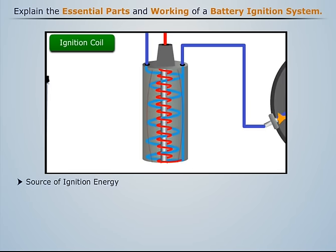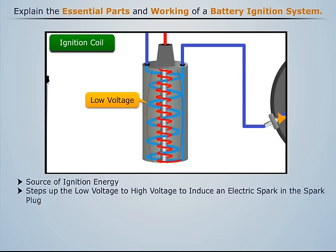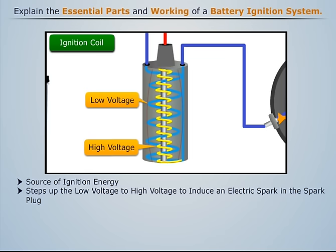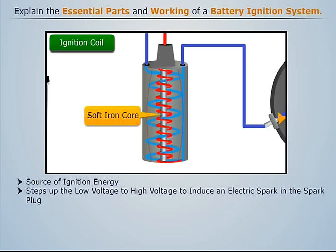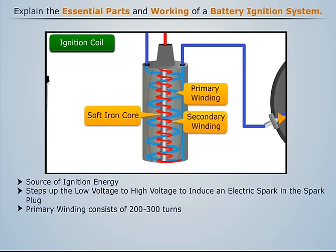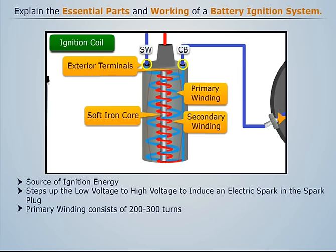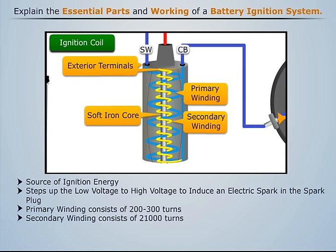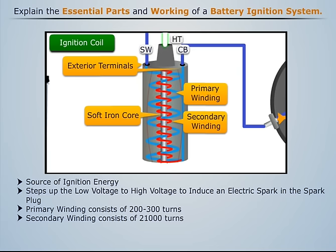The ignition coil is the source of ignition energy. Its function is to step up the low voltage to the level required for inducing an electric spark in the spark plug. The ignition coil consists of a magnetic soft iron core and two insulated conducting coils known as primary and secondary windings. The primary winding consists of 200 to 300 turns with both ends connected to exterior terminals. The secondary winding consists of 21,000 turns with one end connected to the high tension wire that goes to the distributor and the second end connected to the primary coil.